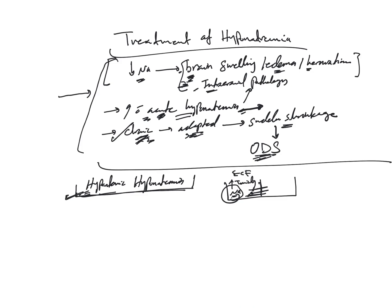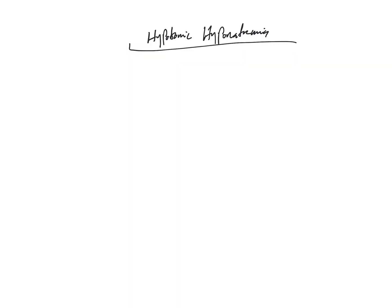Everything we've been discussing exclusively applies to hypotonic hyponatremia — that's the whole focus. Now let's talk about treatment of hypotonic hyponatremia. When you have a case of hypotonic hyponatremia, most people first assess whether it's symptomatic or not. But really, the most important first step is determining whether we are dealing with acute or chronic hyponatremia.